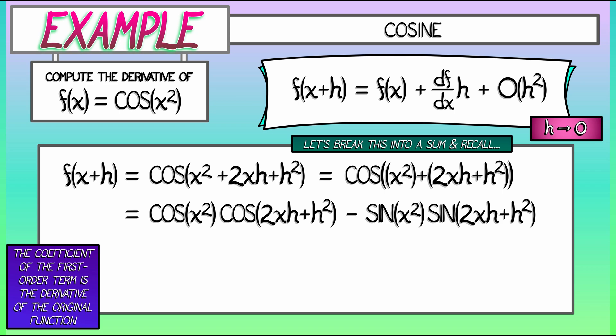Now, why did we do this? We did this so that we can separate out the terms that go to zero. Look at the cosine of 2xh plus h squared. Look at the sine of 2xh plus h squared. In the limit as h goes to zero, both of those terms are going to zero. That means we can expand the cosine and the sine about zero, recalling what we know from Taylor series.